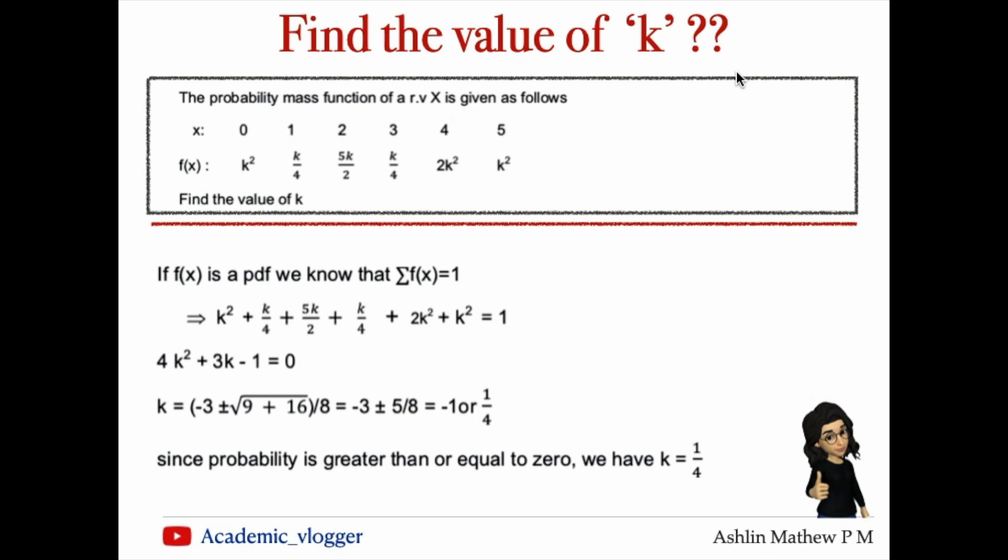Solving this quadratic equation, we get k = (-3 ± 5)/8, which gives us either k = -1 or k = 1/4.